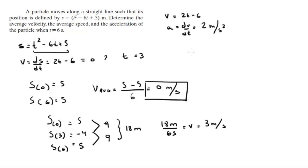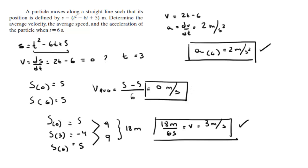So at all times the acceleration is 2 meters per second squared. So a when t equals 6 is 2 meters per second squared. Final answer for the acceleration, final answer for the average speed, and final answer for the velocity.